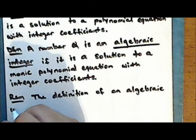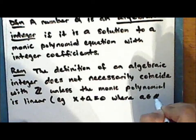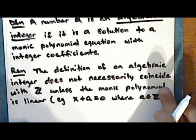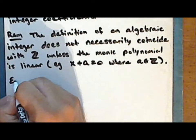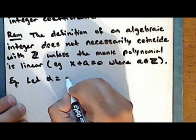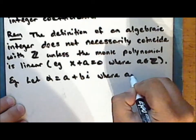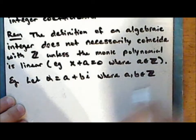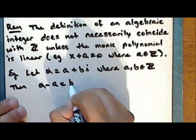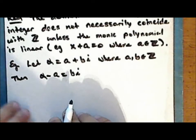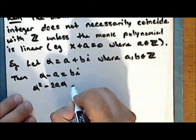So now we'll define a new term. A number alpha is an algebraic integer if it is a solution to a monic polynomial equation with integer coefficients.